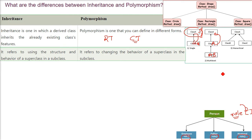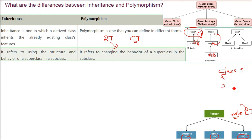Polymorphism refers to changing the behavior of a superclass in the subclass. Polymorphism is all about changing your work depending upon the scenario. For example, you are making a class A here and a class B, and class B has inherited class A. Now both have a function called FUN.